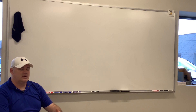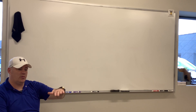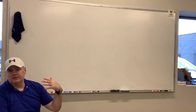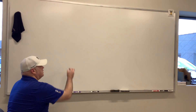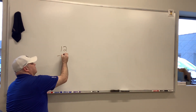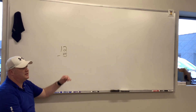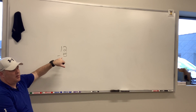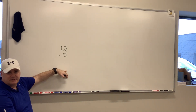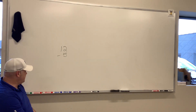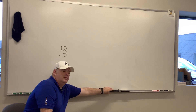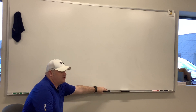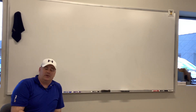The first thing we need to address — because math lab never addresses this — is that in math lab we're working with all positive numbers. When we did subtraction, we always did like 12 minus 5, always the bigger number subtracting a smaller number, so we always ended up with positive answers. Same with multiplication and division. Now we need to introduce negative numbers.